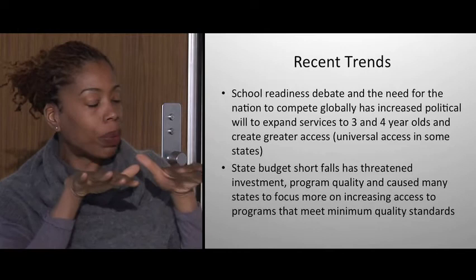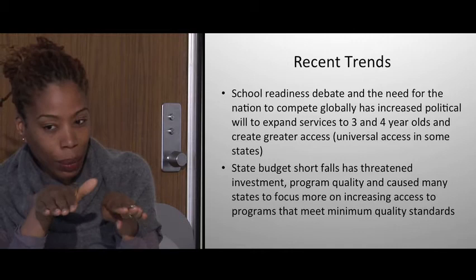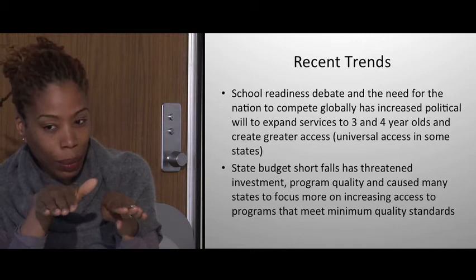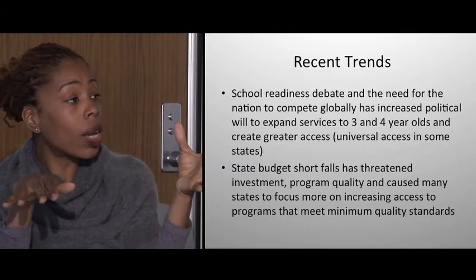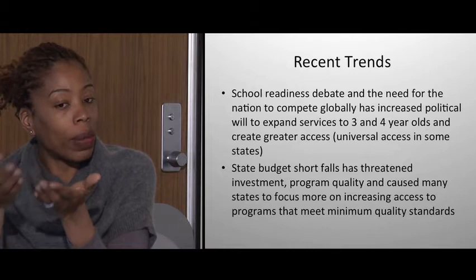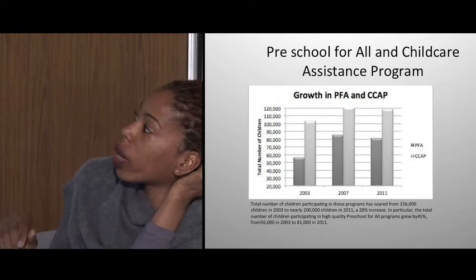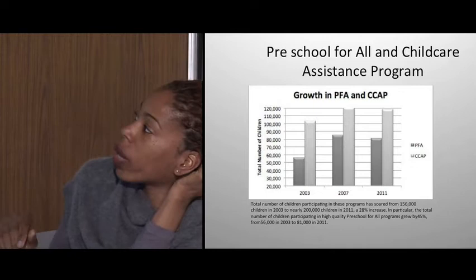There is a debate between access and quality. People are now having a lot of discussion about whether to increase slots and access, or whether doing so comes at the cost of quality. Because state budget shortfalls are so dire, this debate that we thought had been solved years ago has resurfaced. In Illinois, we have two main programs: Preschool for All and the Child Care Assistance Program. Preschool for All was designed in 1998 as a universal program — all three and four-year-olds would have access to preschool, with 11% of the budget set aside for zero-to-three services.